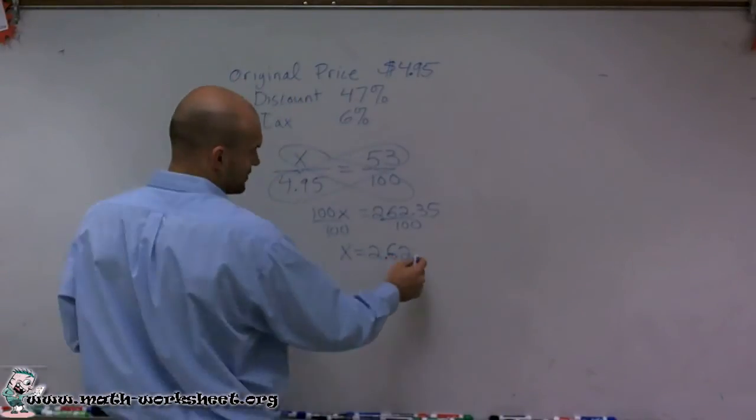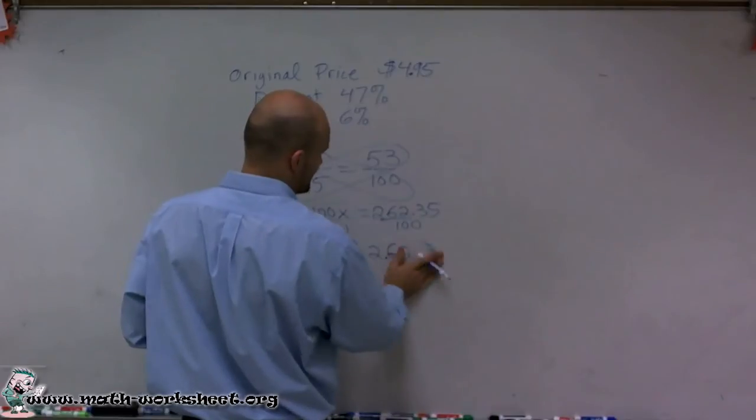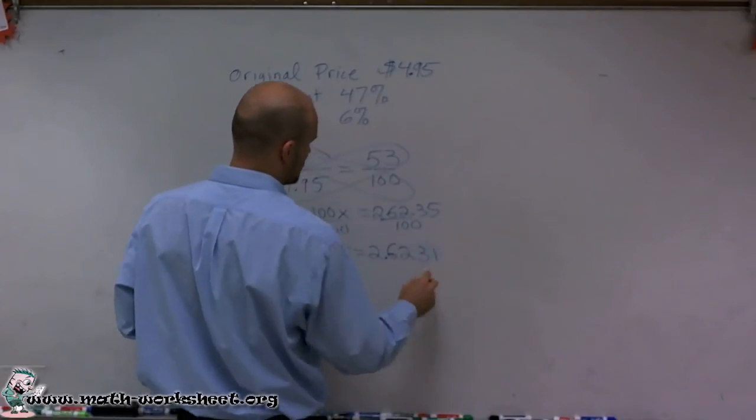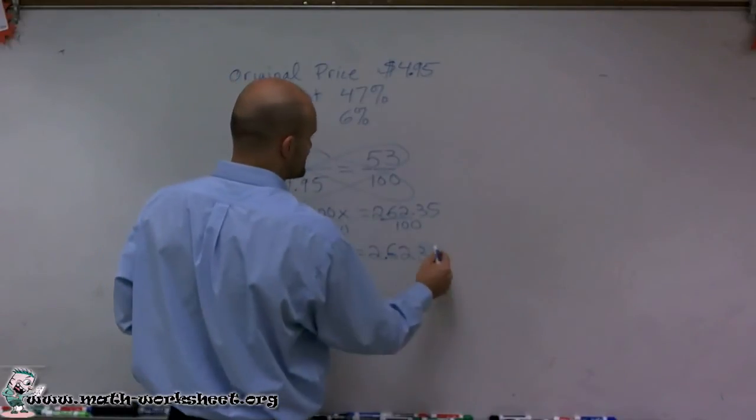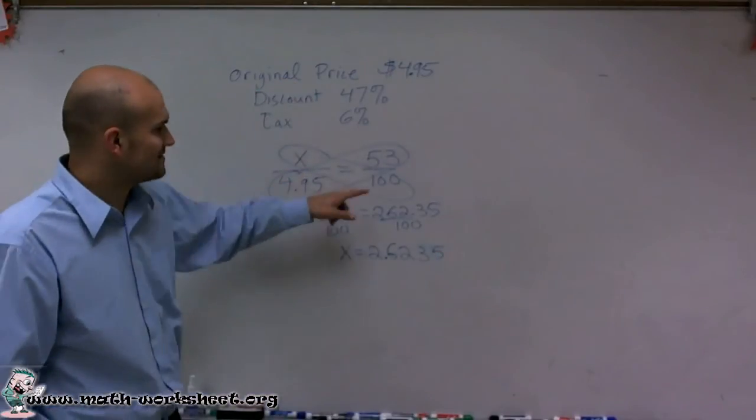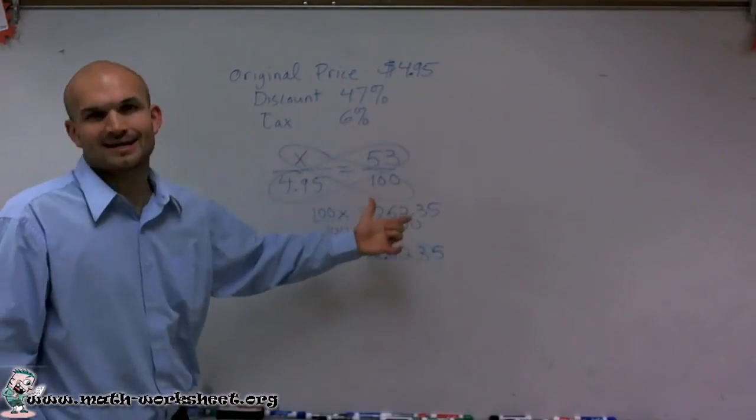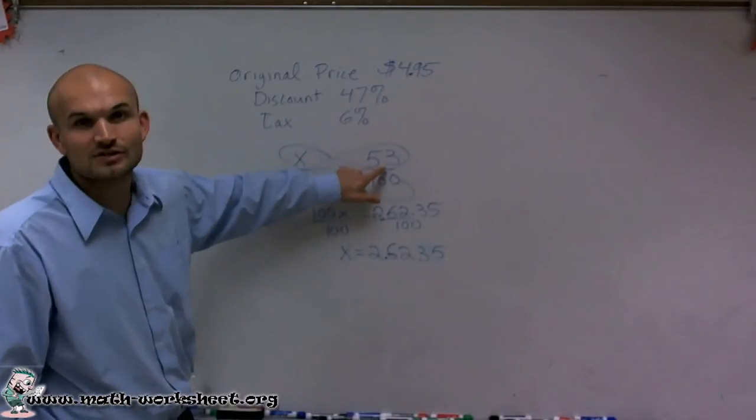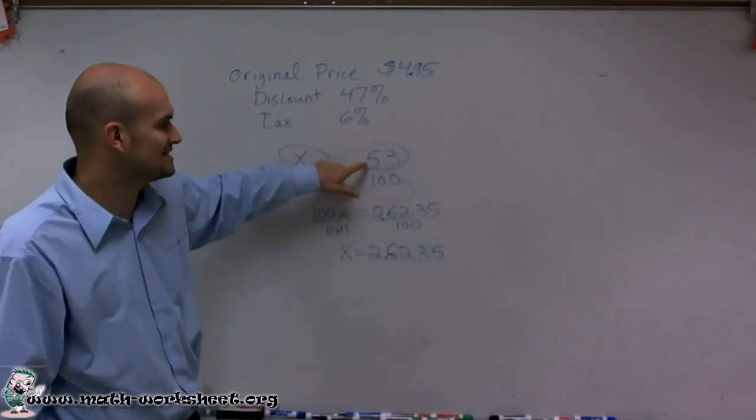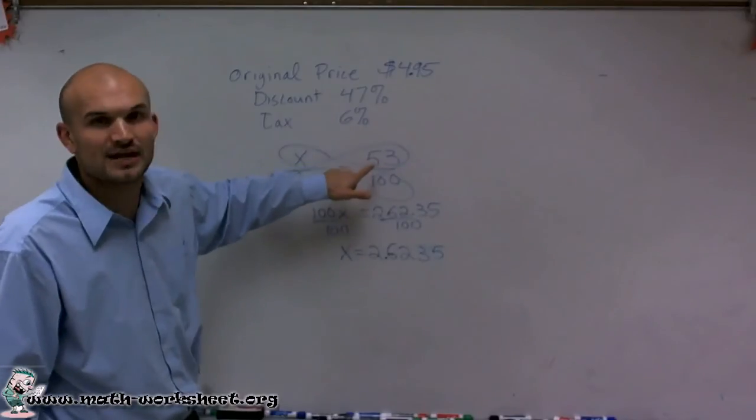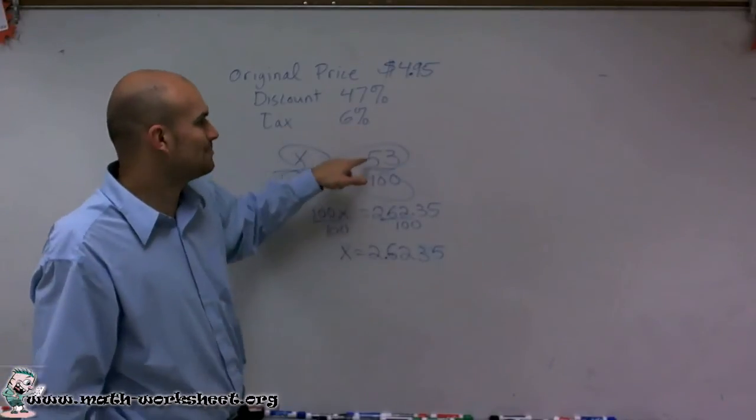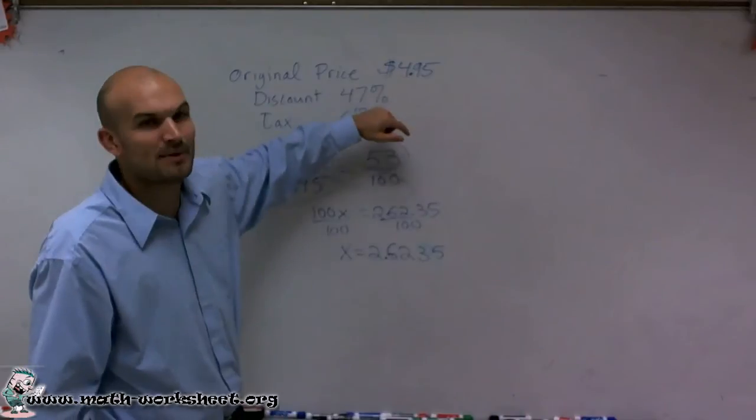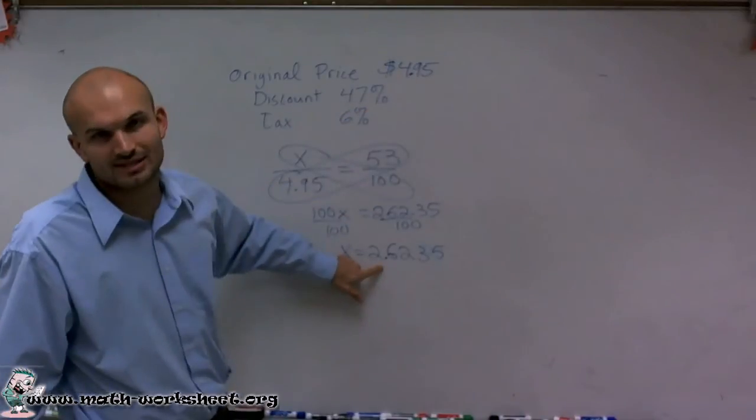Now we're going to actually keep these decimals as we'll round later. But the one thing I want you guys to notice is, see how I multiplied and divided by 100? A quicker way to do this is just, if you convert this to a decimal and move this over by two decimal places, you could simply take 0.53 and multiply it by 4.95 and you'd still get this exact same answer.